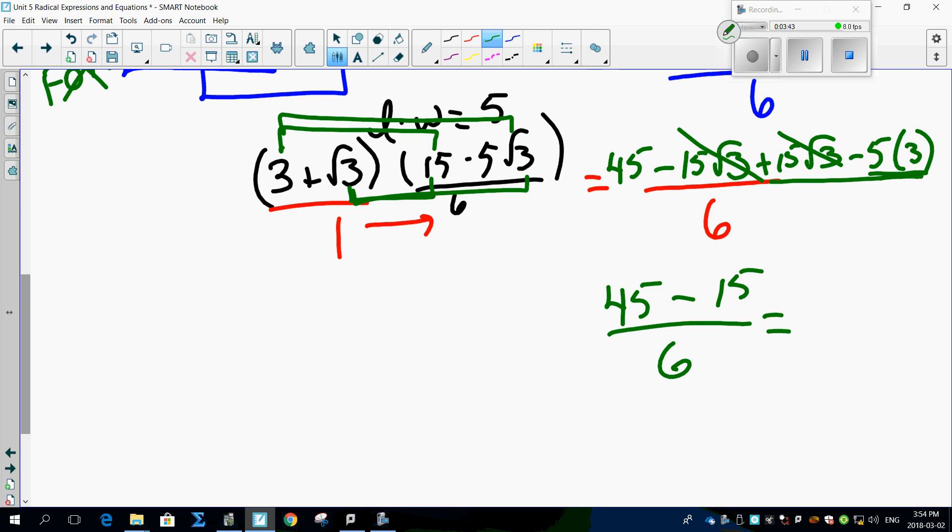45 minus 15 is 30. 30 divided by 6, lo and behold, is 5 meters squared. There's your area. Wow, isn't that just awesome?